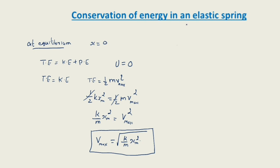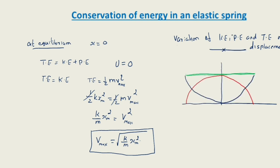Now let's discuss the variation of kinetic energy, potential energy, and total energy with displacement. On the graph, the y-axis represents energy and the x-axis represents displacement. There are three curves: a green straight line parallel to the x-axis, and two parabolic curves in blue and red. By conservation of energy, the total energy is always constant, so the green line represents total energy.